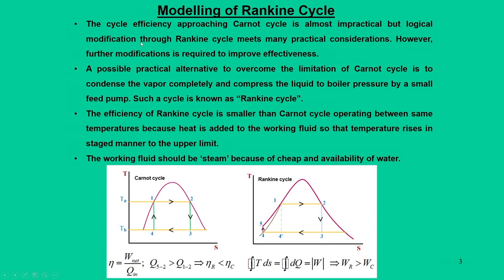In our previous lectures, I emphasized the Carnot cycle and summarized that the Carnot cycle is not possible for practical implementation. So the cycle needs to be modified to ensure practical utility. The cycle efficiency for the Carnot cycle is almost impractical, but we can do some logical modifications through a Rankine cycle. The net effect of these modifications is that Rankine cycle efficiency will be smaller than the Carnot cycle.